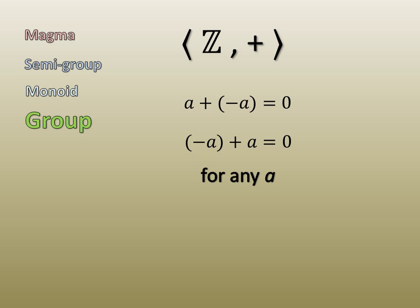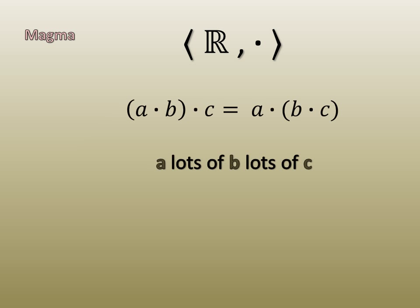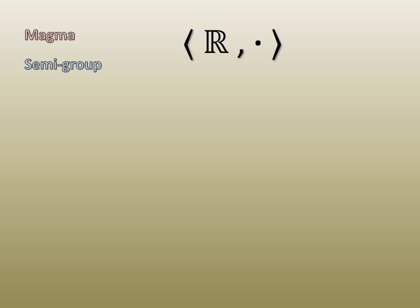Next, let's consider real numbers under multiplication. Again, it's obviously a magma with associativity, so we have a semi-group. As mentioned earlier, one multiplied by any real number won't change the real number, so we have a monoid.